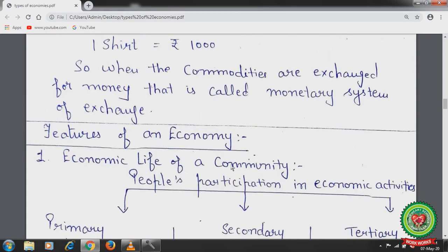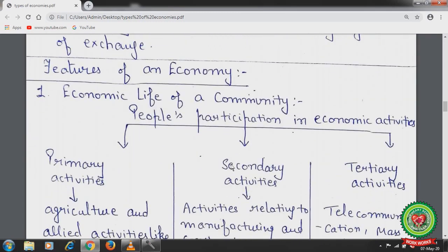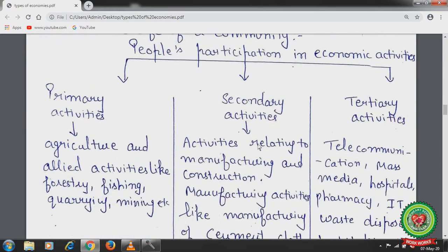Features of an economy: First, economic life of a community — people's participation in economic activities. This includes primary activities like agriculture and allied activities such as forestry, fishing, quarrying, mining, dairy, and sheep herding, along with other primary activities.